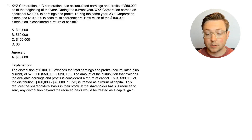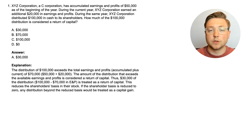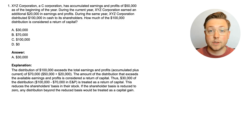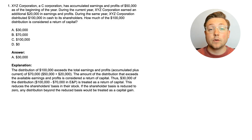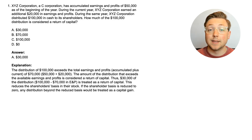This reduces the shareholder's basis in their stock. If the shareholder's basis is reduced to zero, any distribution beyond that would be treated as a capital gain. So in just this first question, we learned the basics of how this works: any amount from earnings and profits is considered a dividend to the shareholders; any amount over E&P is a return of capital; and if the shareholder's basis is reduced to zero, any amount past that is considered a capital gain.